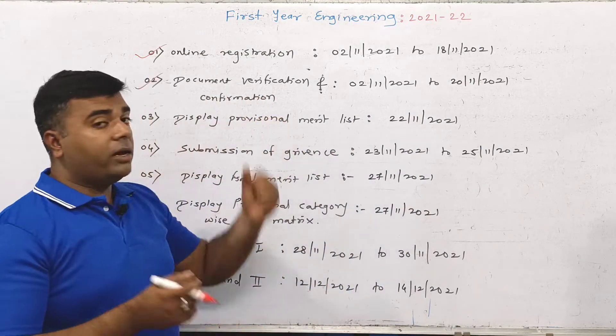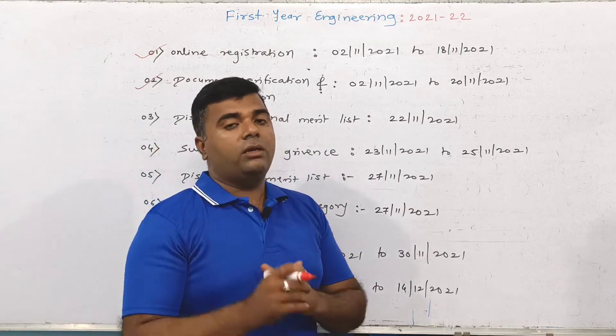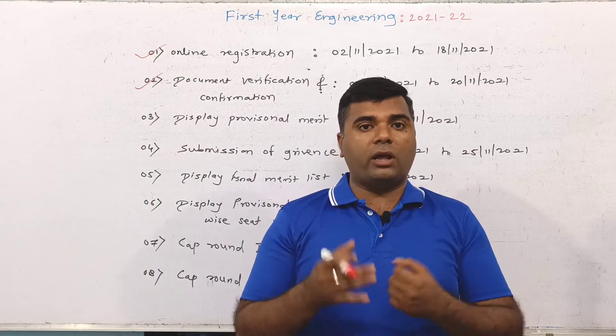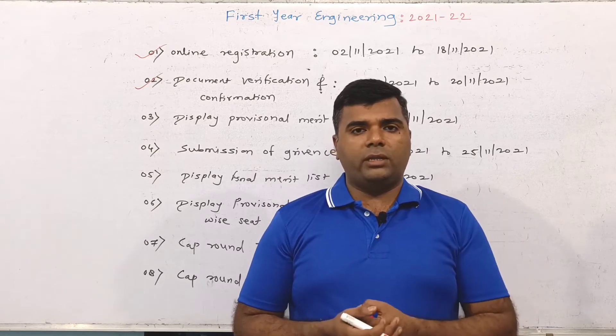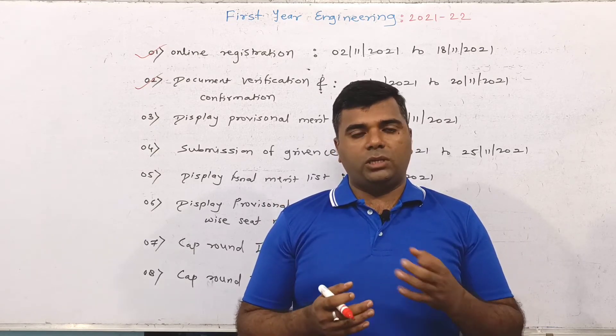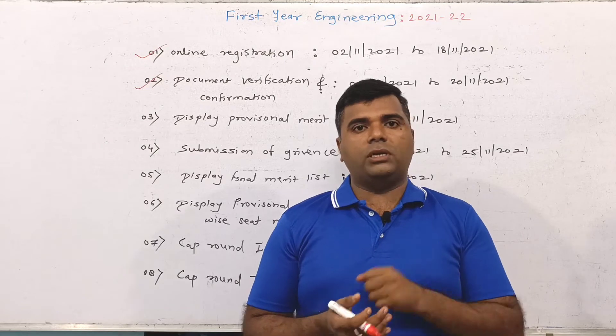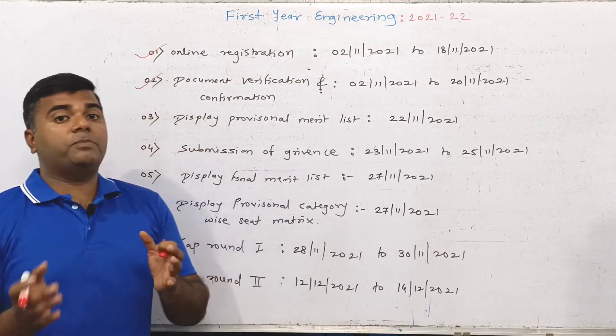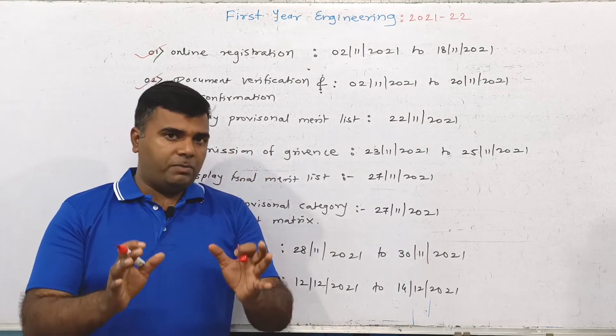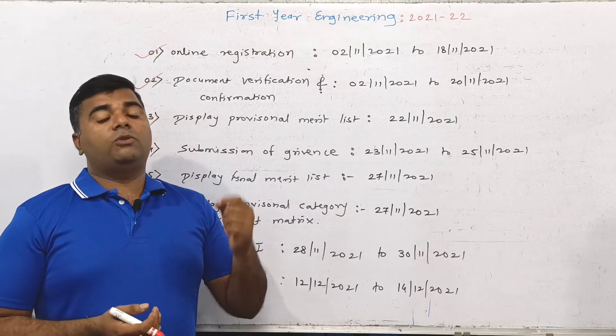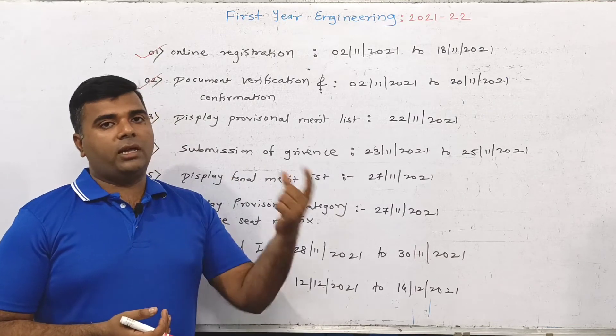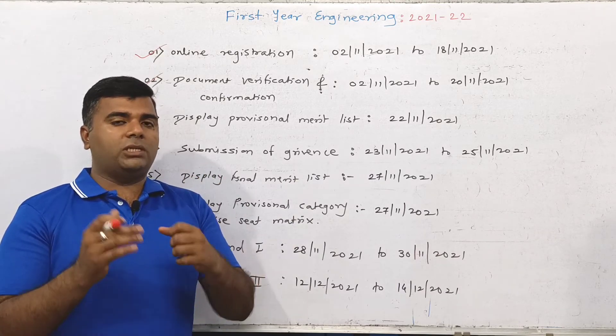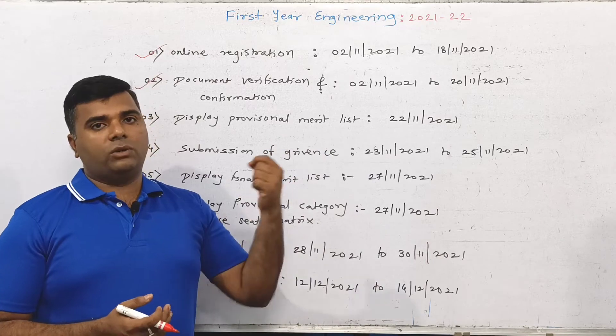You can inform for physical scrutiny. Select the FC center, fill up the form, upload the documents, visit the FC center, and complete the document verification. In the COVID situation, you can select the scrutiny mode to avoid risks.